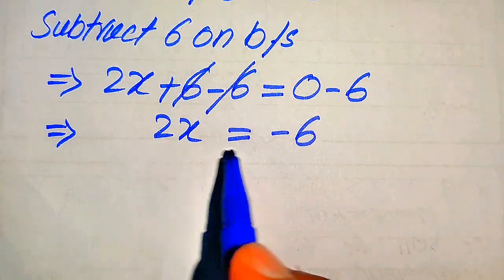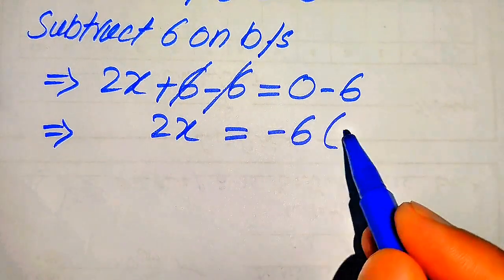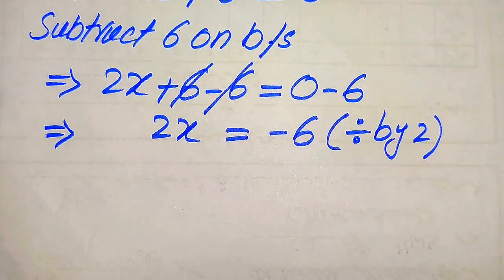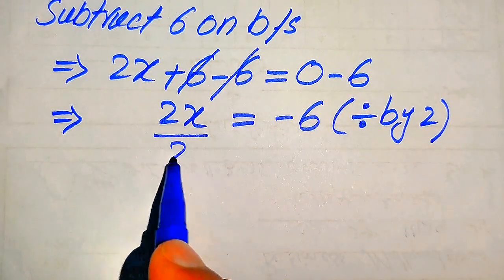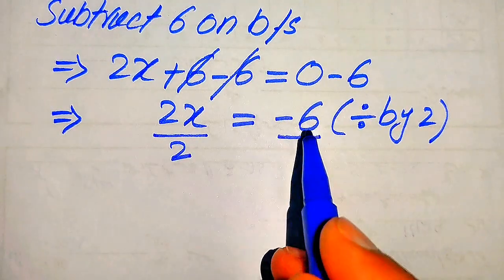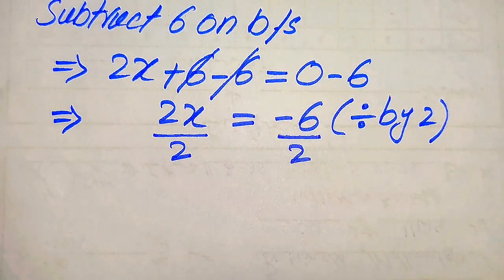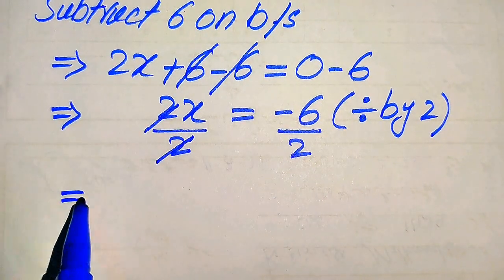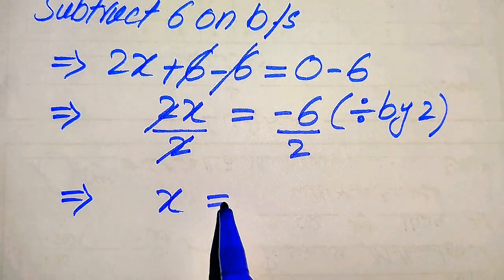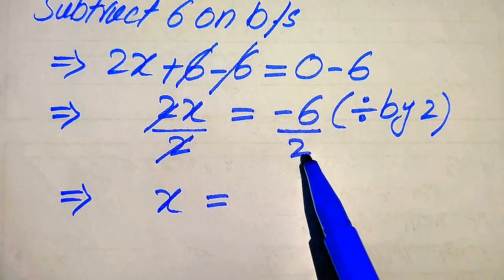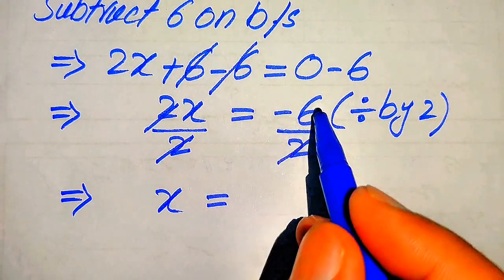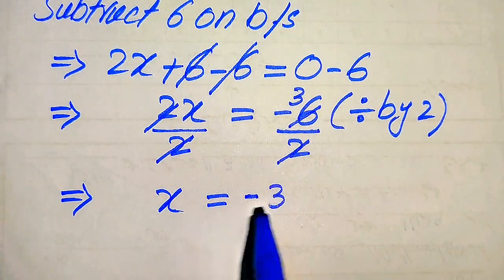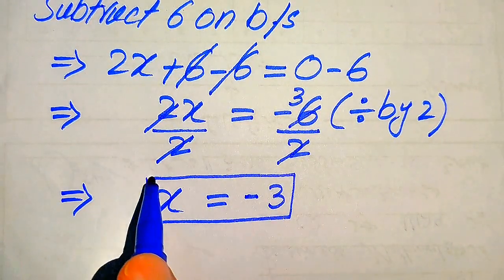We move the 2 to the right hand side by dividing both sides by 2. This gives us 2x over 2 equals minus 6 over 2. The 2s cancel on the left, and on the right we get minus 6 over 2, which simplifies to minus 3. So x equals minus 3.